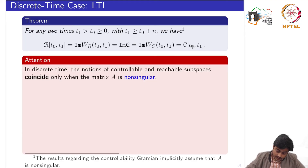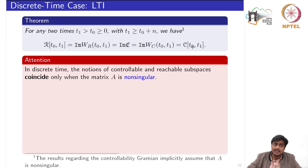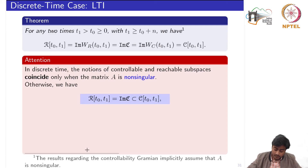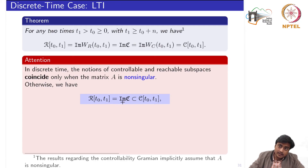In the discrete time case, the notions of controllable and reachable subspaces coincide only when the matrix A is non-singular. One reason is that when A is singular, you cannot compute the solution or compute x0. When A is singular, the reachable subspace equals the image of the controllability matrix, and both of these spaces are a subset of the controllable subspace.